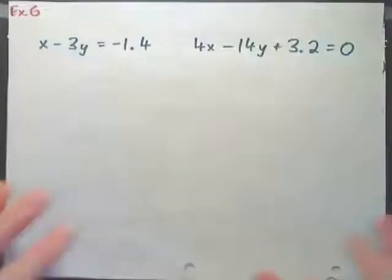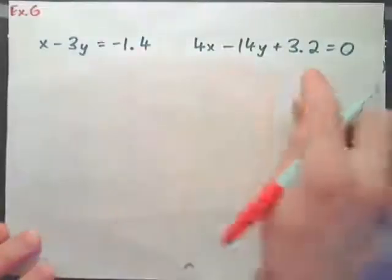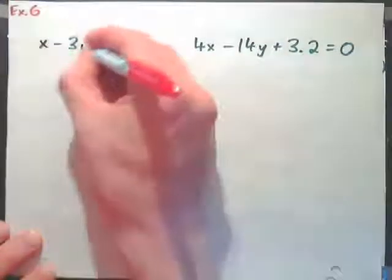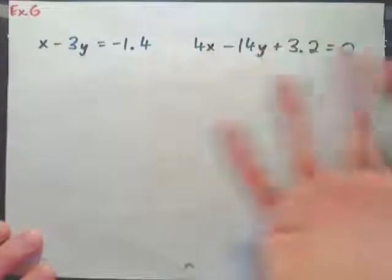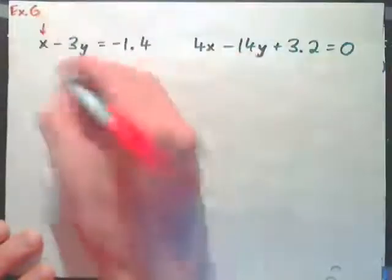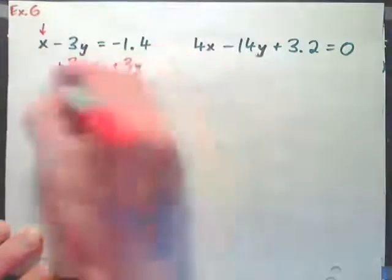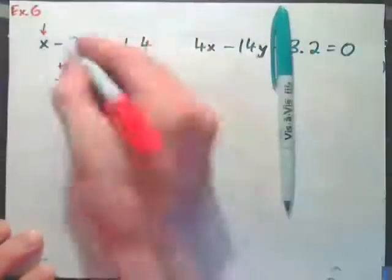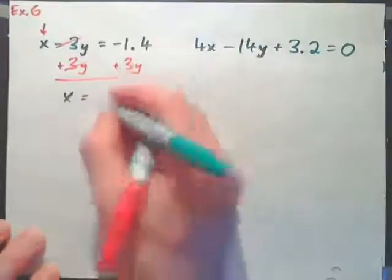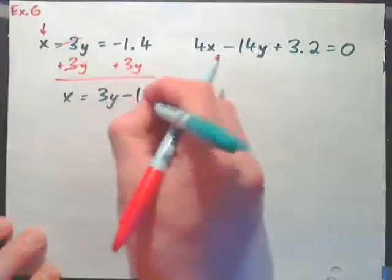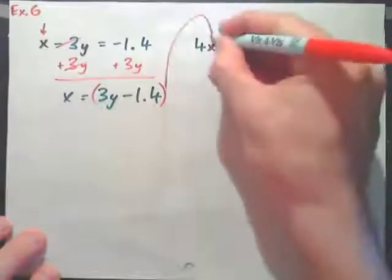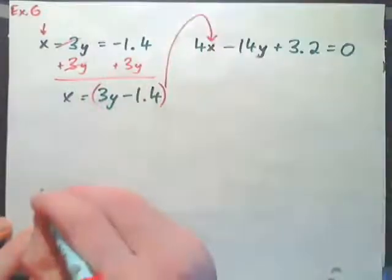For example 6, we need to decide which variable is easiest to solve for first among the options x, y, x, or y. The easiest is x in the second equation — just add 3y to both sides to get x equals 3y minus 1.4. Then put parentheses around that and substitute it in place of x in the first equation.